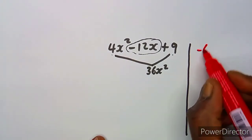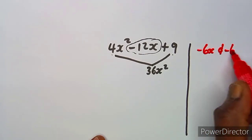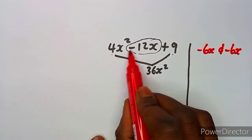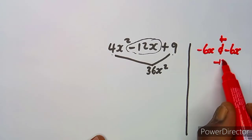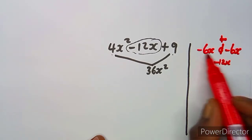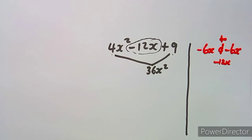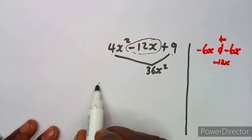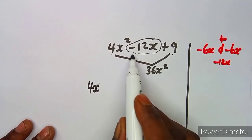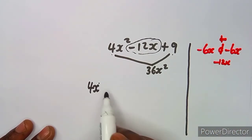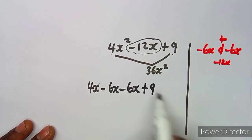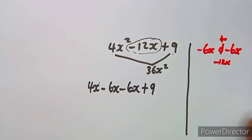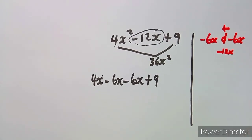Those two numbers must also be factors of 36x squared, but when you add them they must give you the middle term. The two terms we are talking about are negative 6x and negative 6x. Take note: the middle term is negative. If I add these two terms I obtain negative 12x, and if I multiply them I obtain positive 36x squared. So these are the two terms I'm going to replace the middle term with.